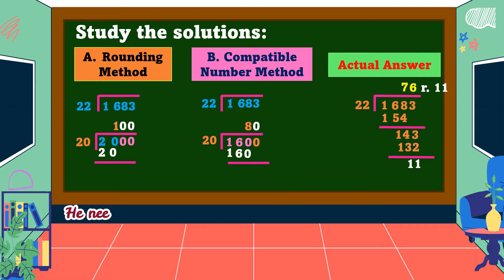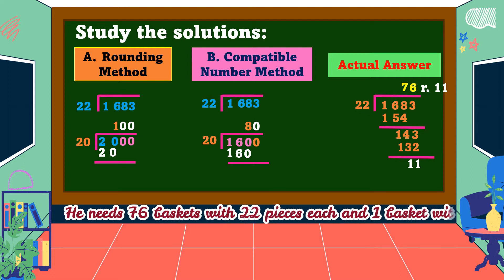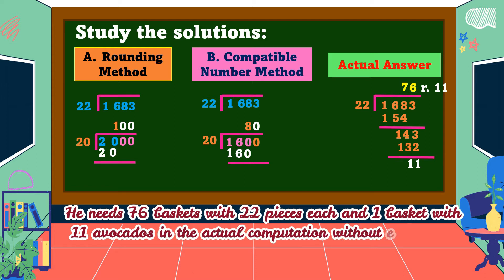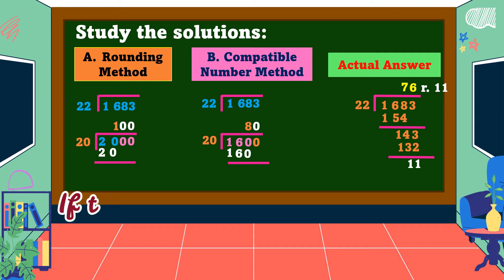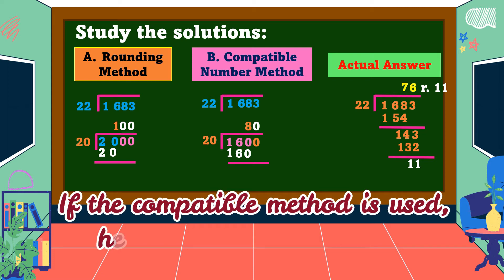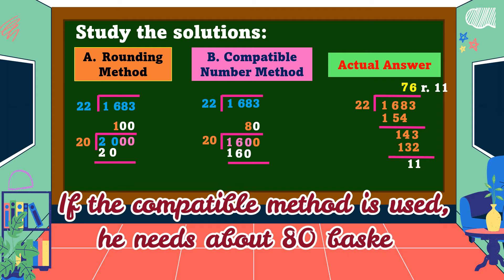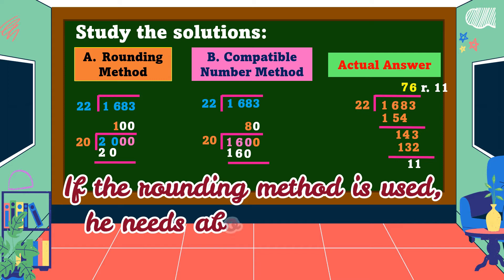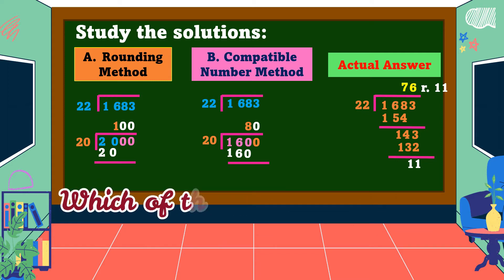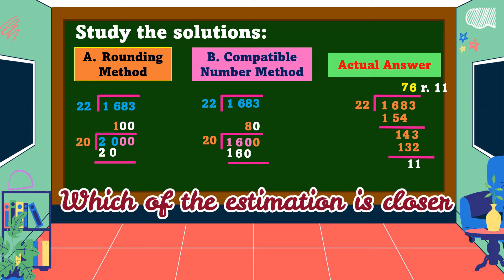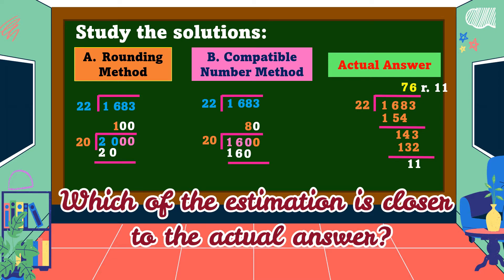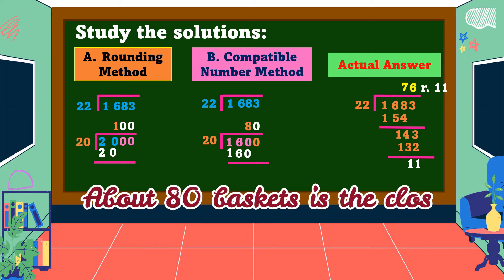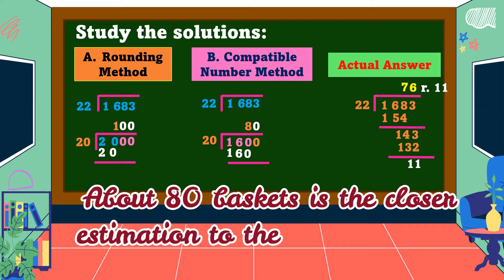He needs 76 baskets with 22 pieces each and one basket with 11 avocados — this is the actual answer without estimation. If the compatible number method is used, he needs about 80 baskets. If the rounding method is used, he needs about 100 baskets. About 80 baskets is the closer estimation to the actual answer.